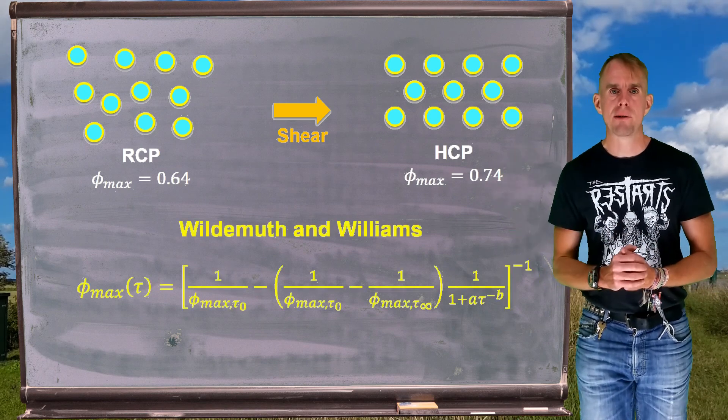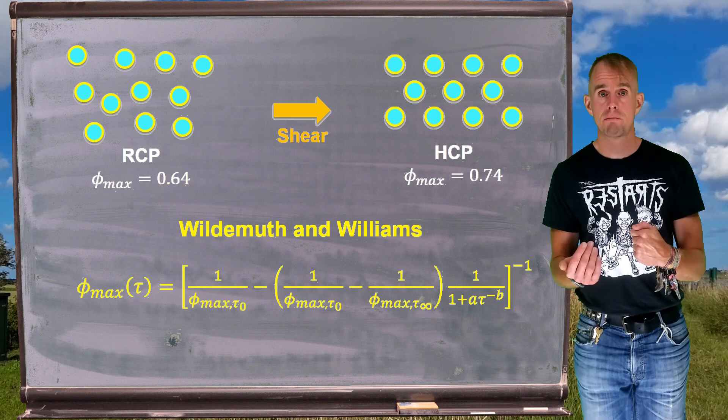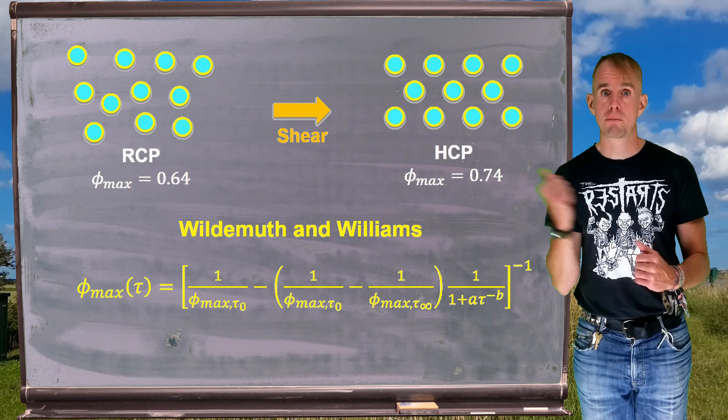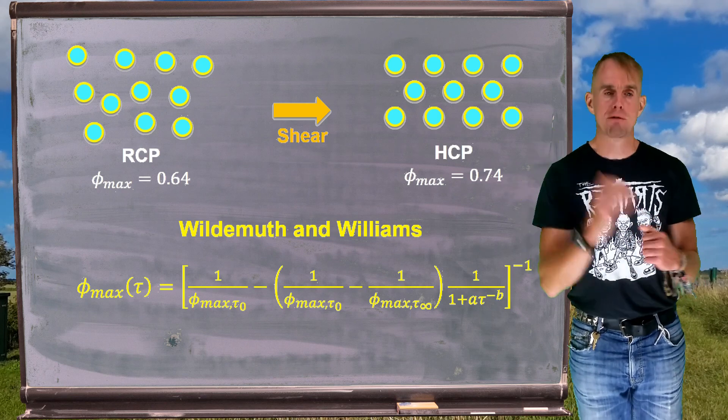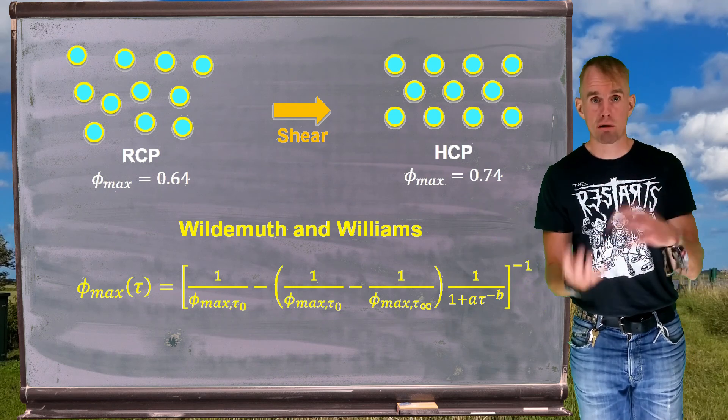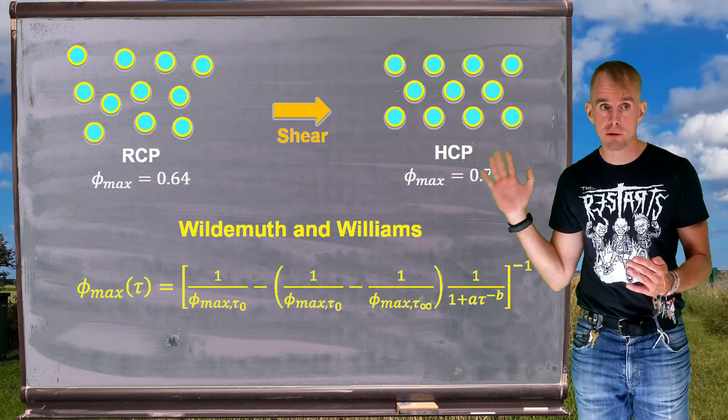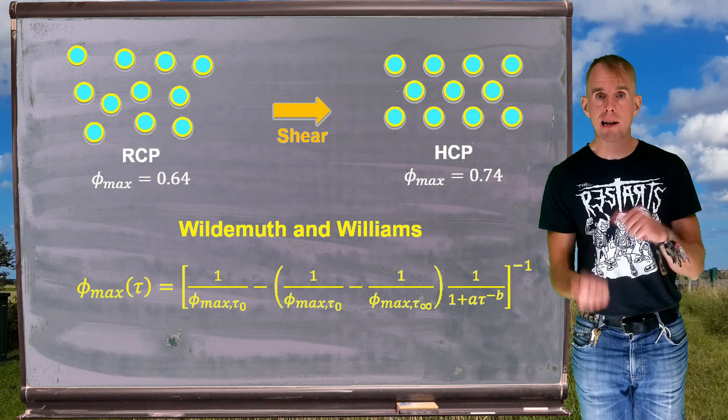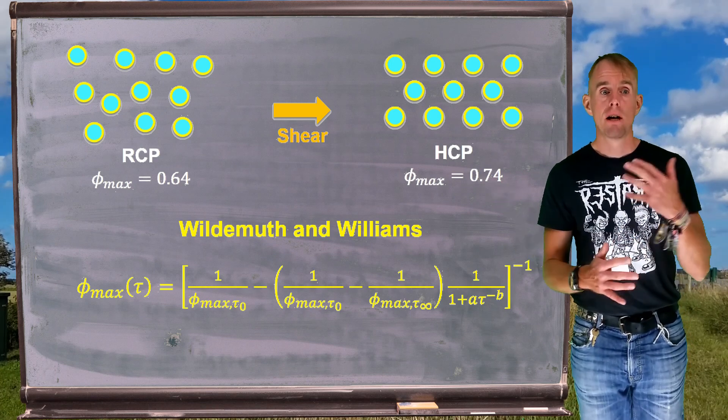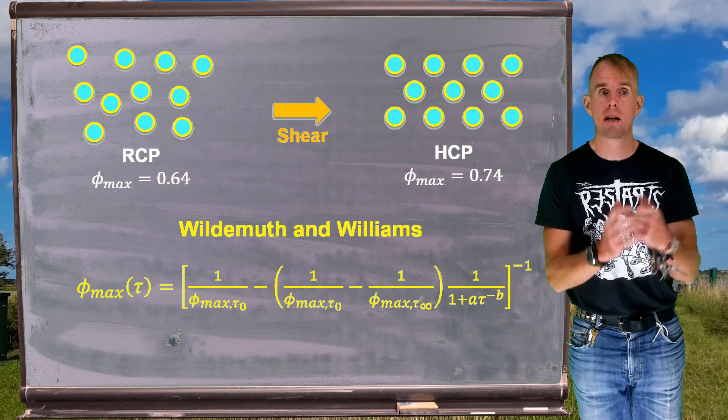The expression that is now on the board, Wildermuth and Williams, allows us to calculate φ_max as a function of shear stress. It effectively assumes that you can transition from one packing fraction, in this case 0.64, random close packing, to another packing fraction, hexagonal close packing 0.74, and that transition is controlled by the amount of stress applied to a system. And we can see that in the expression there on the board, on the right hand side, we have our two maximum packing fractions limit. φ_max at τ_0 is random close packing. φ_max at τ_infinity, in this case, is hexagonal close packing. So those are our two packing fraction limits.